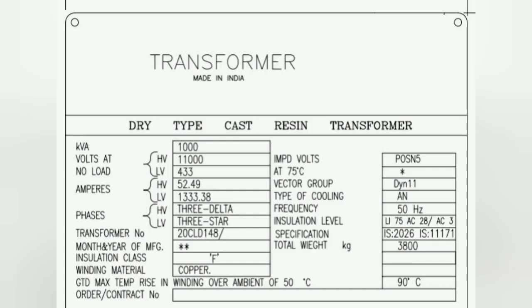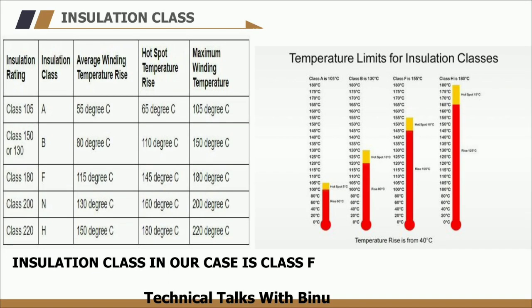Coming back to the nameplate, the serial number and the month and year of manufacture are also imprinted. The next parameter is the class of insulation. In this case, the class of insulation is Class F, which means the average winding temperature will be 115°C. As you can see here, this is the table showing the different classes of insulation — Class A, B, F, N, and H — with winding temperatures ranging from 65°C to 180°C.